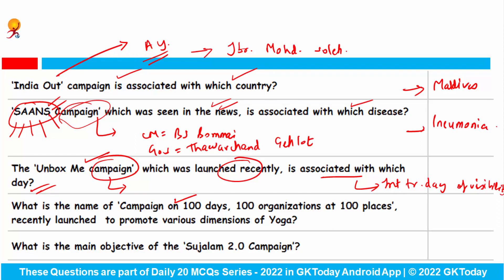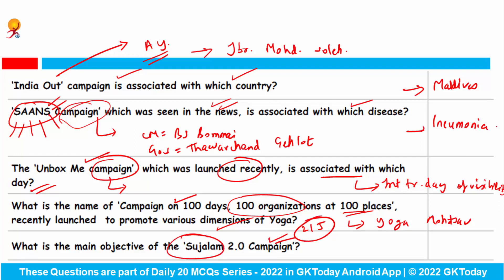What is the name of the campaign on 100 days, 100 organizations at 100 places, recently launched to promote various dimensions of yoga? This campaign is Yoga Mahotsav. International Day of Yoga is observed on 21 June. What is the main objective of the Sujalam 2.0 campaign? The main objective of this campaign is grey water management, and it works under the Ministry of Jal Shakti.